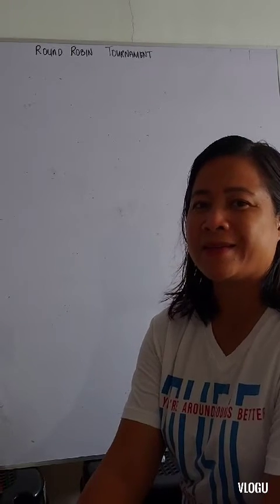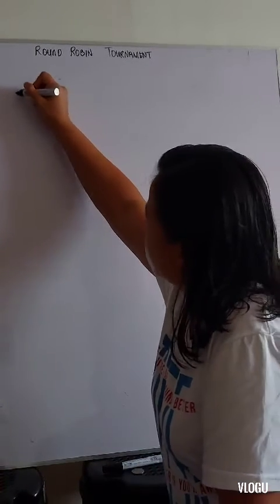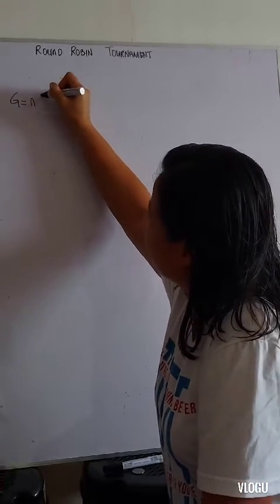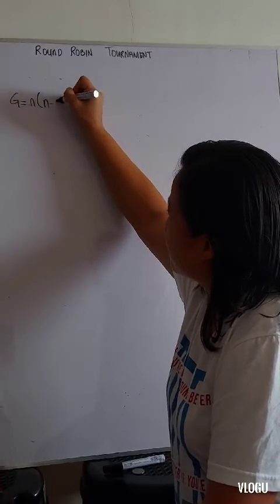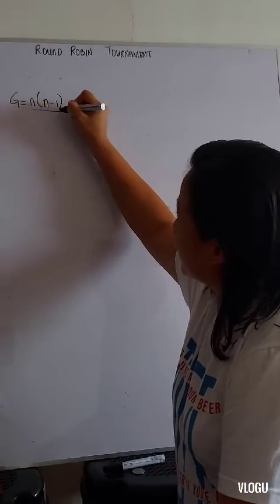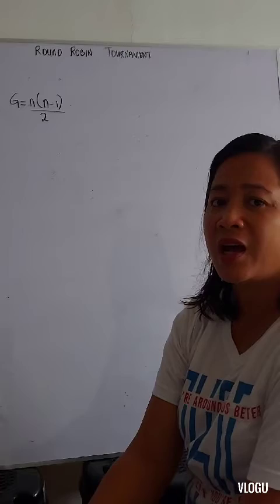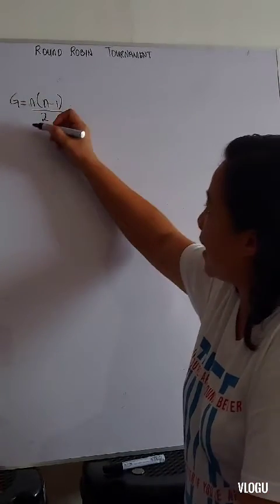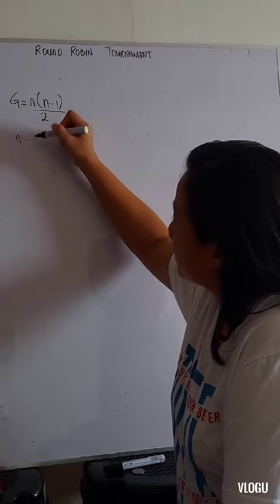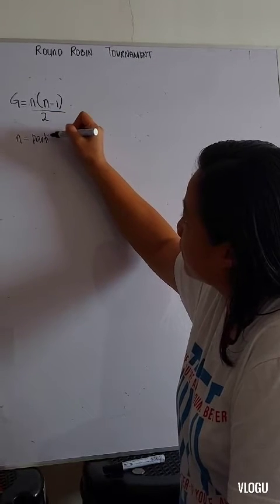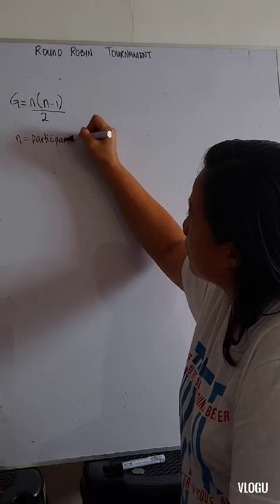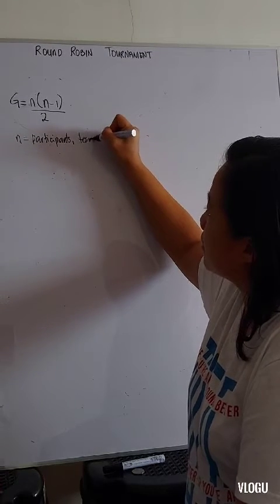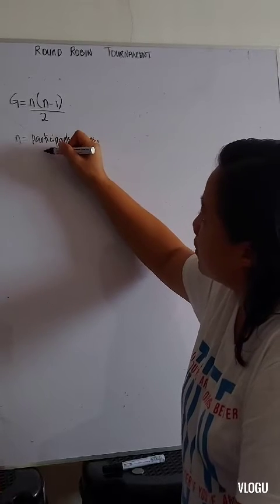The formula for round robin tournament is G equals n times n minus 1 divided by 2. Remember that n stands for participants, teams, or competitors.